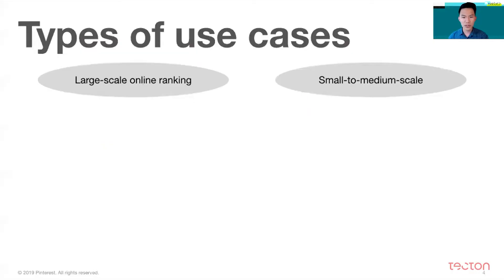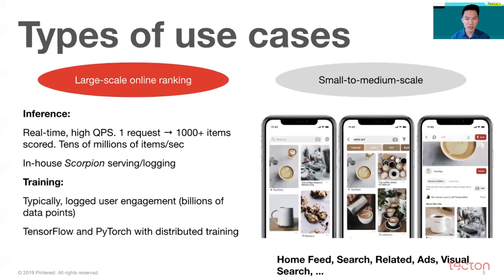We have a really diverse set of ML applications, which can be roughly categorized as large-scale online ranking and small to medium-scale use cases. Large-scale ranking is the most obvious class of ML on Pinterest. Anytime you see a grid of pins — like on the home feed, search, or related pins — we rank thousands of items behind the scenes to show users the best ones within 100 milliseconds or so. The scale is tens of millions of items every second, and this has very large infrastructure challenges.